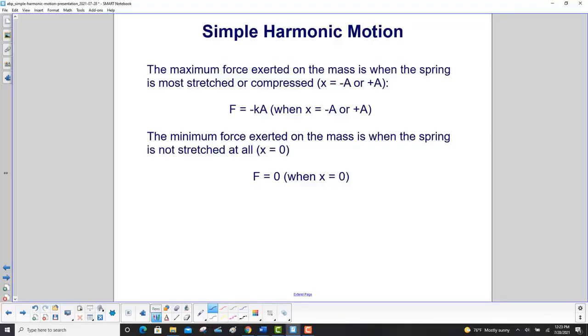The maximum force exerted on the mass is when the spring is most stretched or compressed, where x is equal to negative A or plus A. So F is equal to minus kA. The minimum force exerted on the mass is when the spring is not stretched at all, where x is equal to zero. You're at the equilibrium point. In that case, the force is equal to zero.